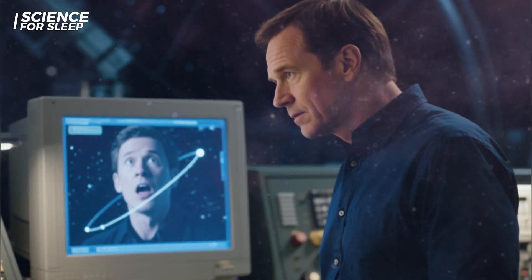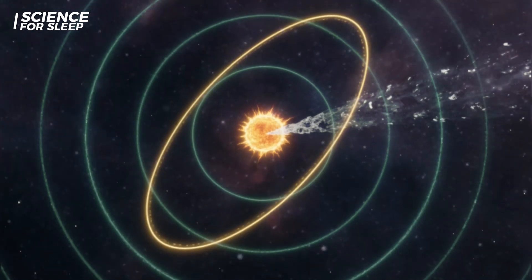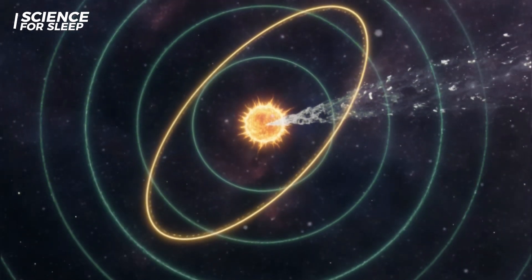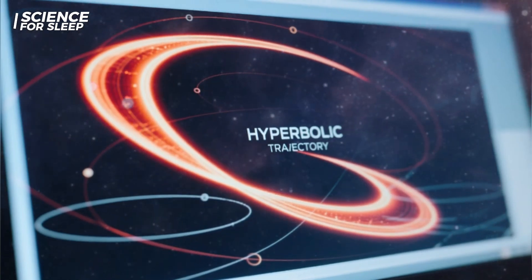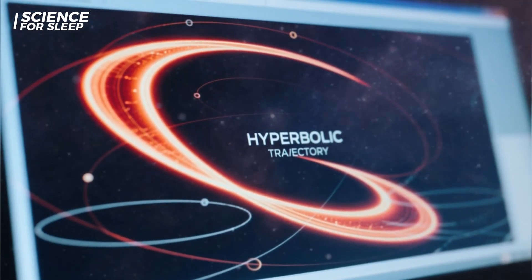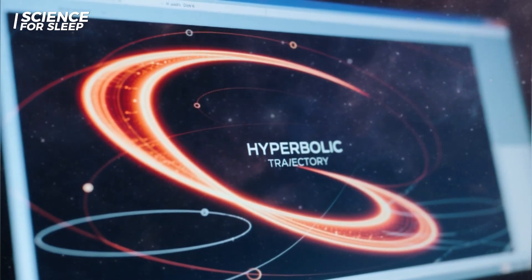But as they tracked its path, a startling realization began to dawn. This object wasn't following the familiar elliptical roads that our local comets travel. Its trajectory was different. It was a hyperbola, an open-ended path that screamed one thing: it wasn't from around here.